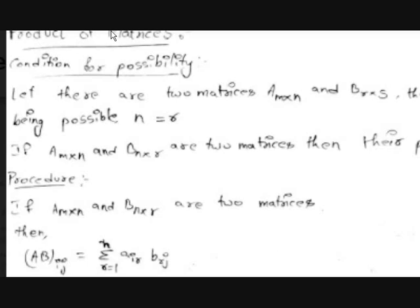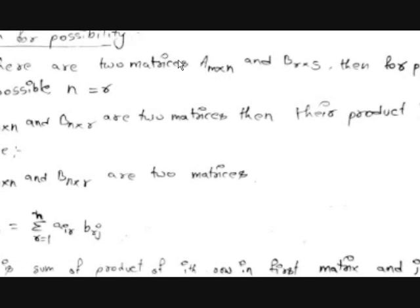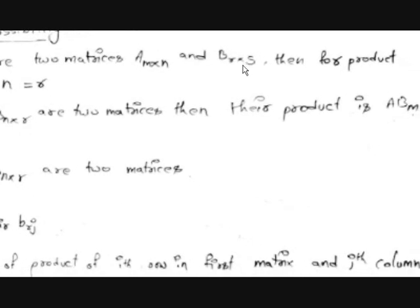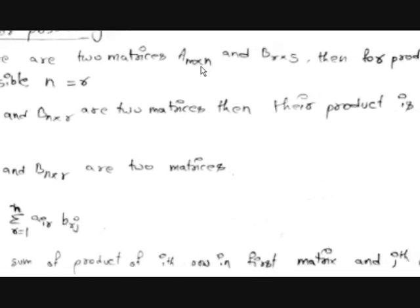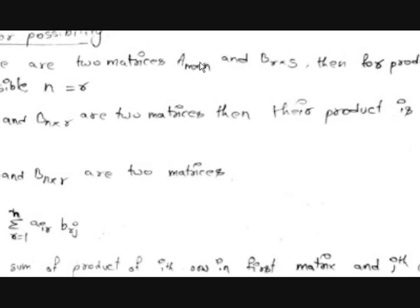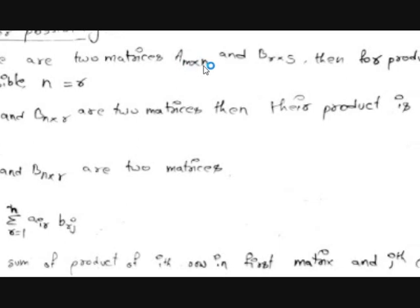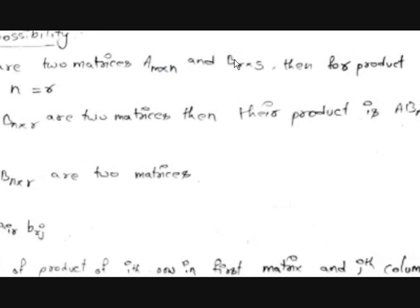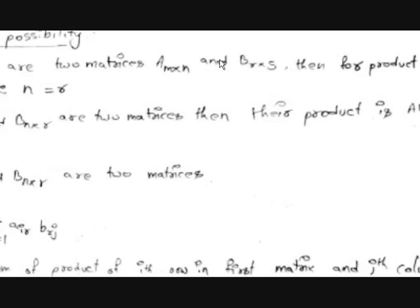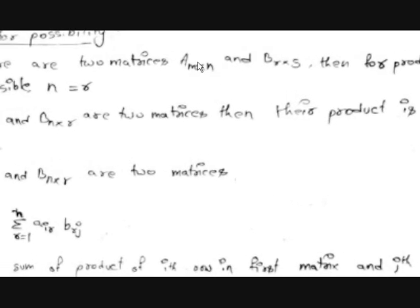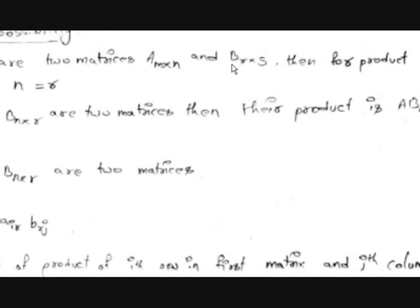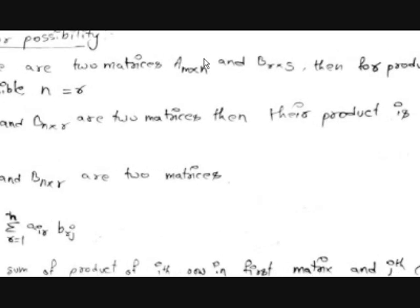First, the condition for the possibility of the product. The product of two matrices is only possible if a certain condition is satisfied. Let there be two matrices A with order M by N and another matrix B with order R by S. The product AB is possible if N is equal to R — meaning the number of columns in matrix A must equal the number of rows in matrix B.